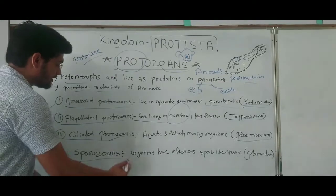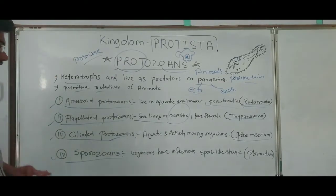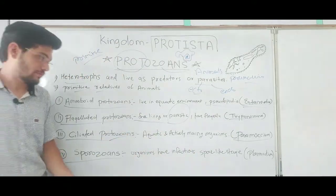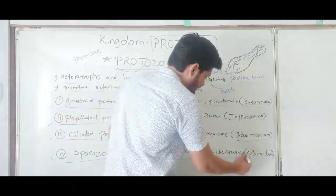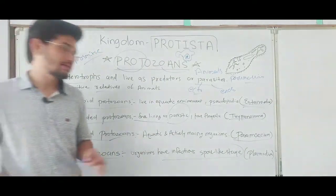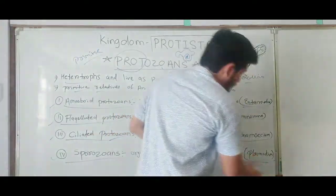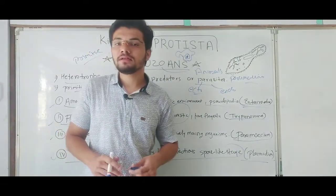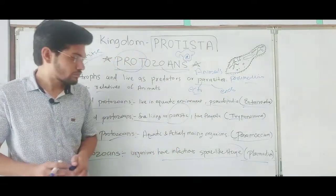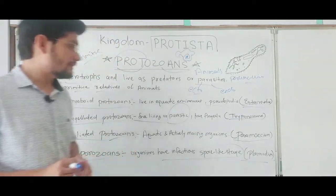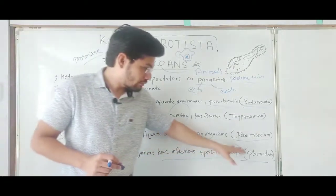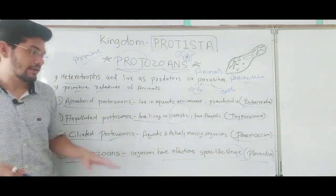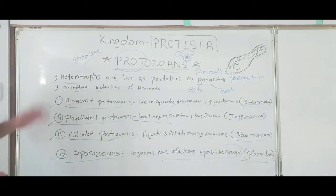The last group is sporozoans, which are organisms that have an infectious spore-like stage in their life cycle. The best example is Plasmodium, which is the malaria parasite that causes malaria in human beings. There are various species such as Plasmodium vivax and Plasmodium falciparum.